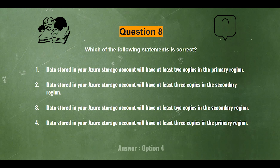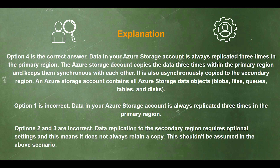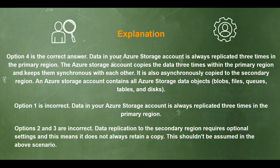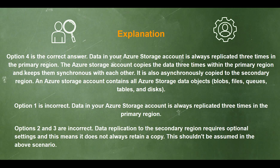The correct answer is option 4. Data in your Azure storage account is always replicated three times in the primary region. Azure storage copies the data three times within the primary region and keeps things synchronous with each other. It is also asynchronously copied to the secondary region. An Azure storage account contains all Azure storage data objects: blobs, files, queues, tables, and disks. Options 2 and 3 are incorrect — data replication to the secondary region requires optional settings.